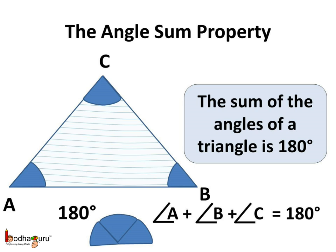Here, in the triangle ABC, if we add all the angles, that is, angle A plus angle B plus angle C, then the sum would be equal to 180 degrees.